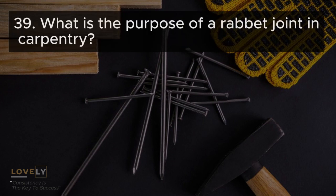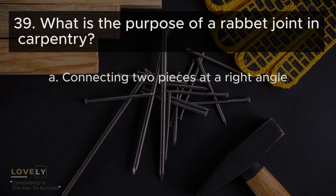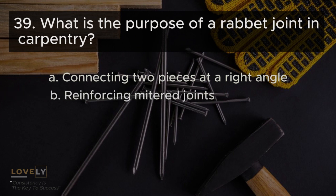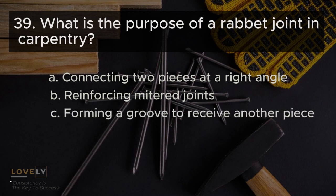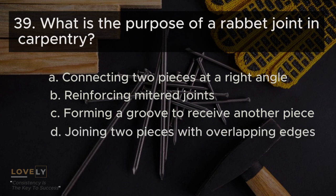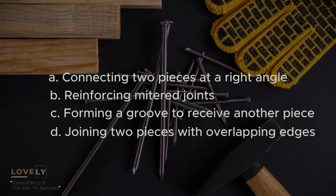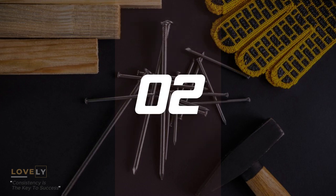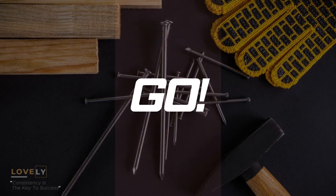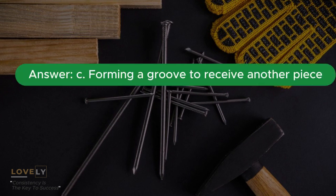Question 39: What is the purpose of a rabbet joint in carpentry? A. Connecting two pieces at a right angle B. Reinforcing miter joints C. Forming a groove to receive another piece D. Joining two pieces with overlapping edges. Answer C. Forming a groove to receive another piece.